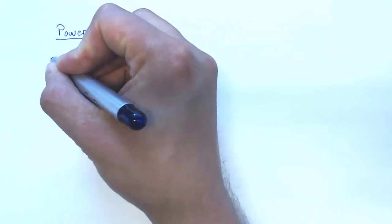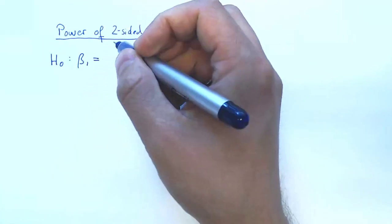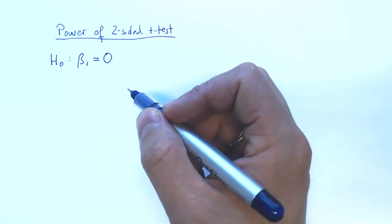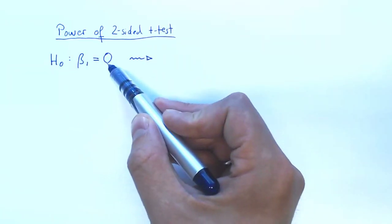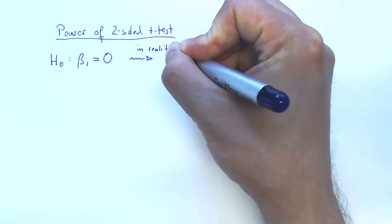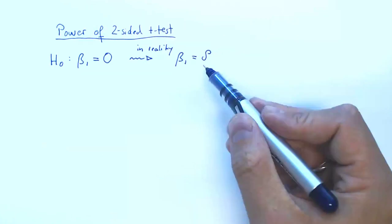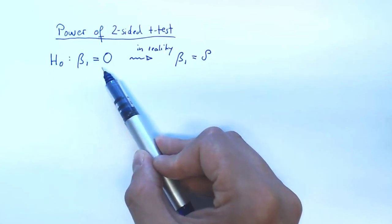So to get an idea of why the two-sided t-test has power, let's look at one specific example. So suppose we're testing beta 1 against 0. And also let's suppose that this null hypothesis is wrong. So we want to reject and in reality beta 1 is equals to delta. So delta is the distance of the real world from the hypothesized world.